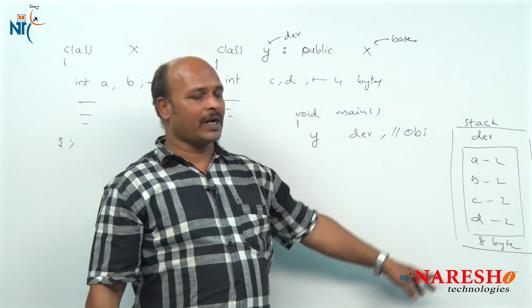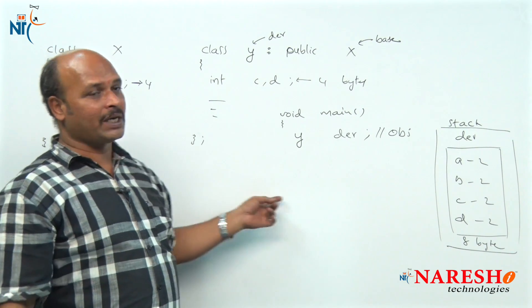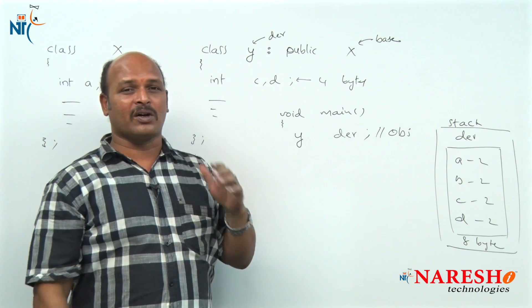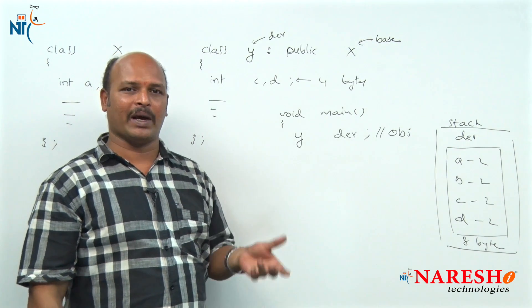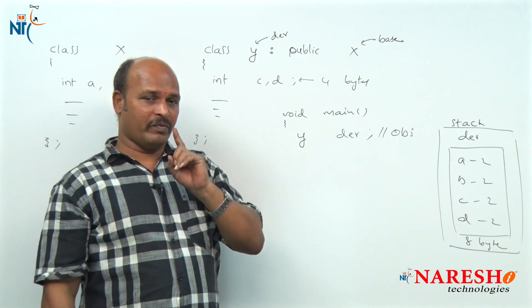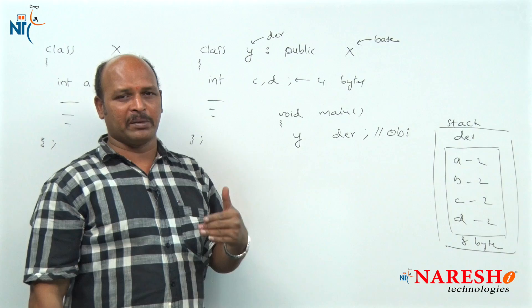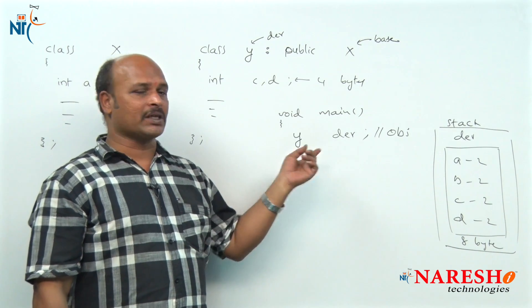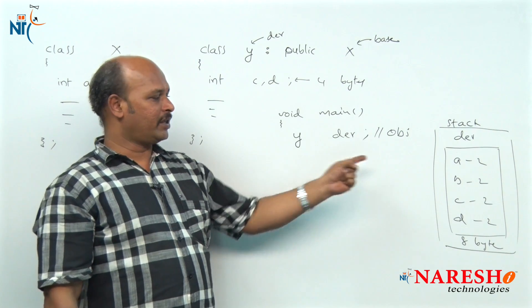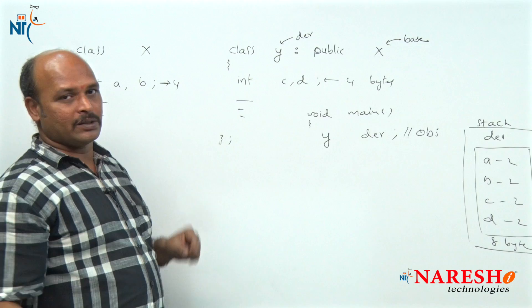Whenever the derived class object is created, memory is allocated for the base class members as well. That is why the derived class object size is the sum of base class members plus derived class members. Remember: when an empty class is created — a class declared without any data members — its size will automatically become 1 byte.